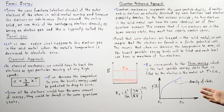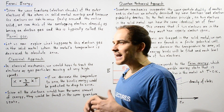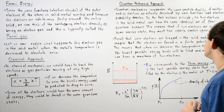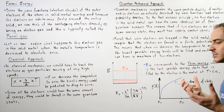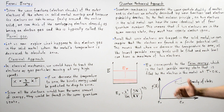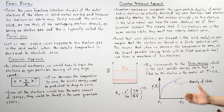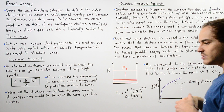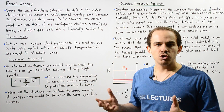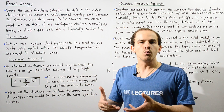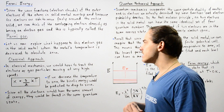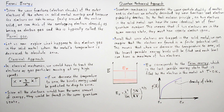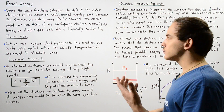Now let's take the quantum mechanical approach. Recall that quantum mechanics incorporates the wave-particle duality of matter — that is, electrons are described not as particles, but as waves using wave functions that give us the electron probability density. In quantum mechanics, we can use Schrödinger's equation to solve for the wave function of any particular electron within any particular atom, and we can use those wave functions to determine what the electron probability distribution is, which gives us the likelihood of finding electrons within some given region.